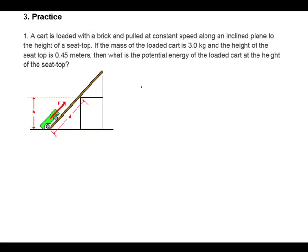If the mass of the loaded cart is 3 kilograms and the height of the seat top is 0.45 meters, what is the potential energy of the loaded cart at the height of the seat top? Okay, let's go through our five-step process. Let's draw a picture. It looks like our picture is already done for us on the left side.